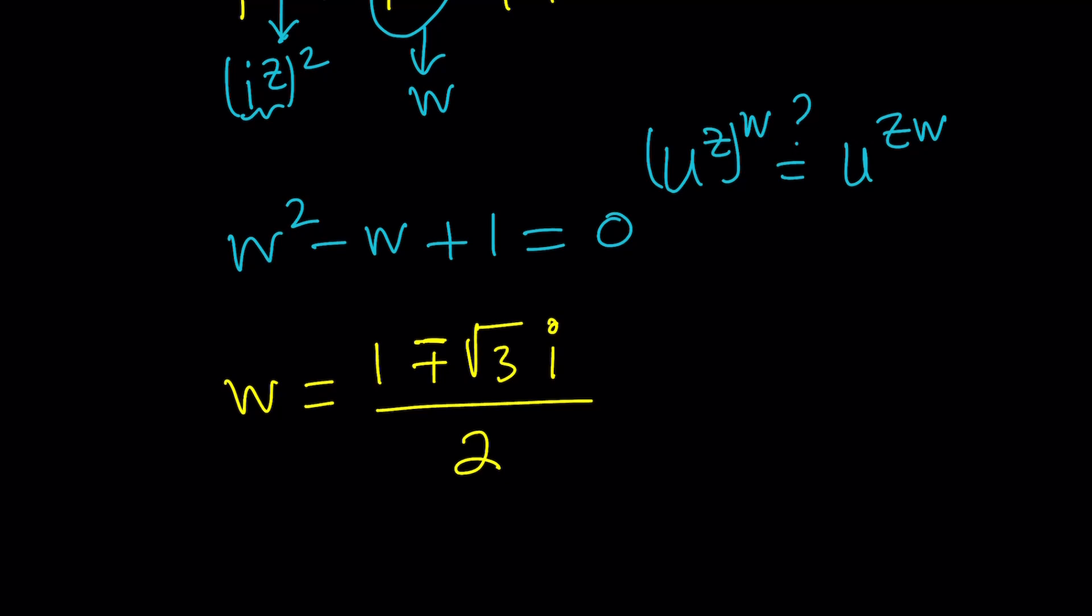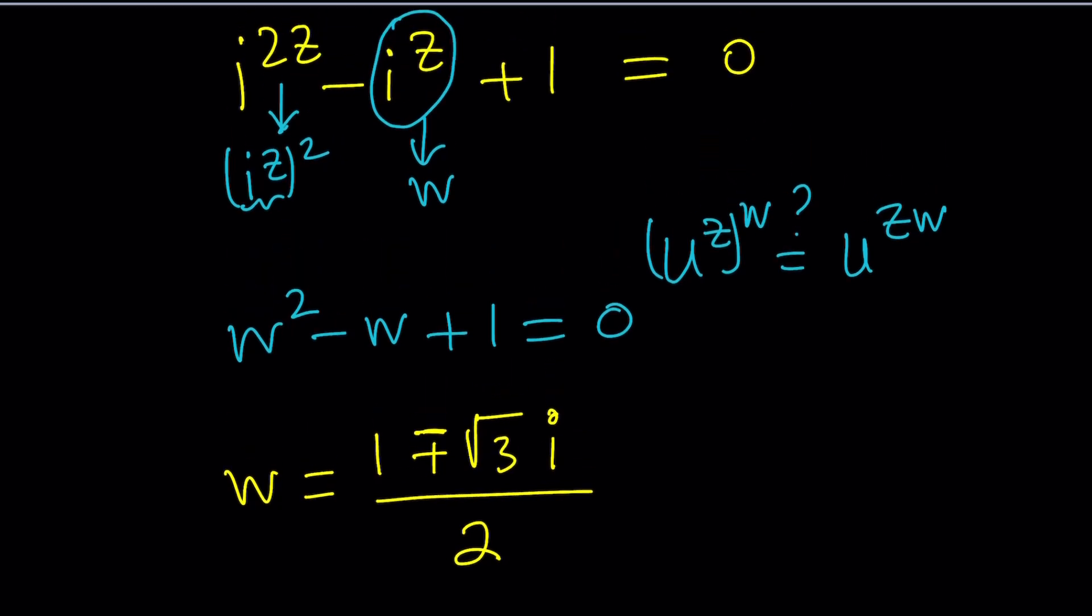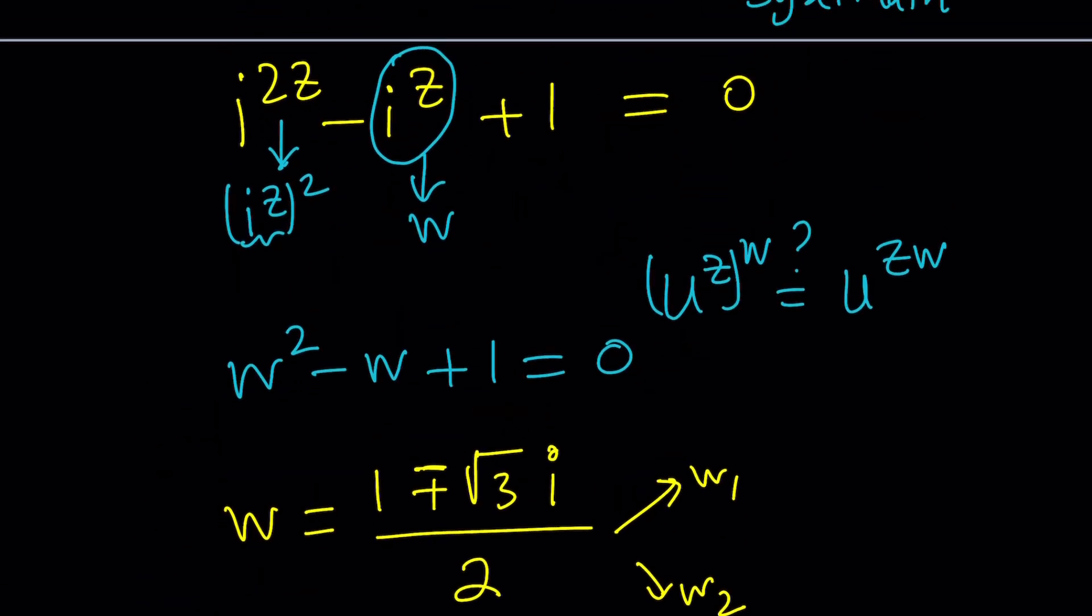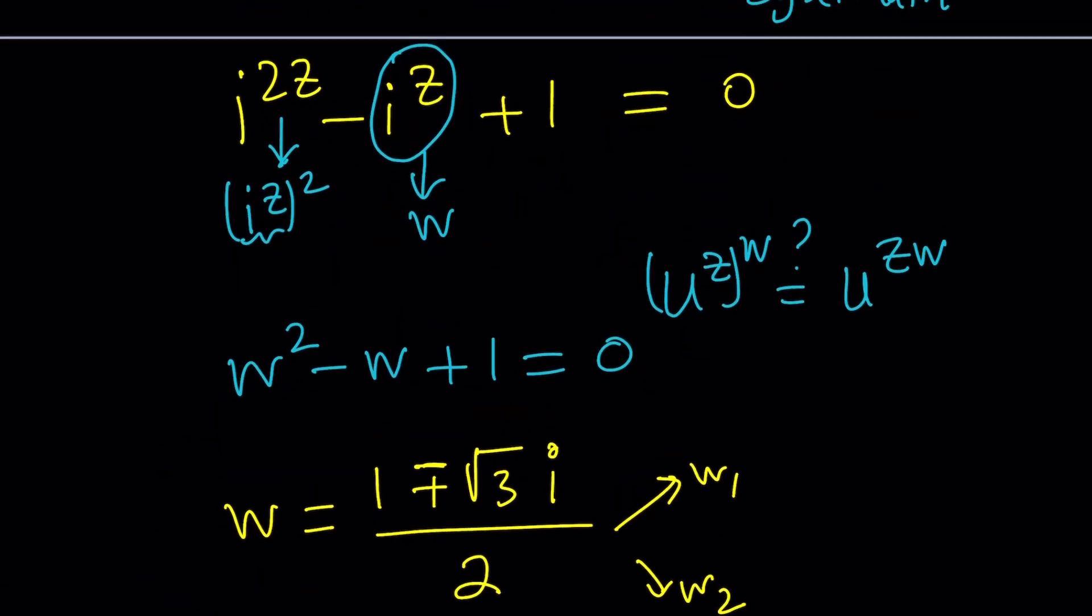So we have two solutions, and what are we going to do with these? We're going to back-substitute. Because W is not the end goal, we know that W is i to the z. So let's split it up into two solutions, W1 and W2, and let's set each one equal to, for example, let's start with the plus sign, the more positive one, and set it equal to i to the power of z. So if i to the power of z is equal to this, how am I going to solve for z?